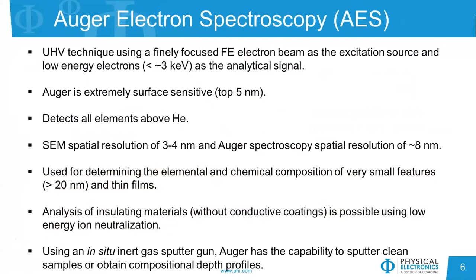Auger in general is used for determining elemental and chemical composition of very small features, larger than 20 nanometers or so, as well as for looking at thin films. It can analyze insulating materials, although it can be challenging at times, and you can do that without adding conductive coatings because we are using low energy ion neutralization for charge compensation. And finally, by adding an in-situ inert gas ion beam, we can combine the Auger with the ion beam for either sputter cleaning of samples or obtaining compositional depth profiles.